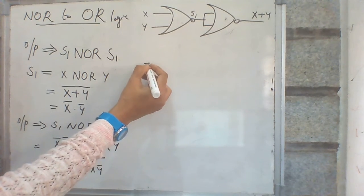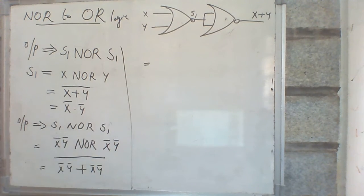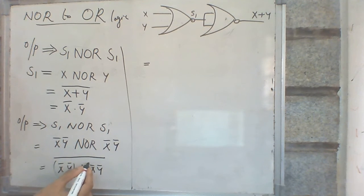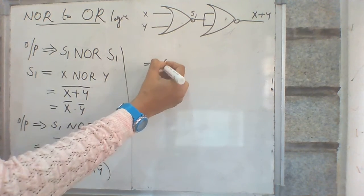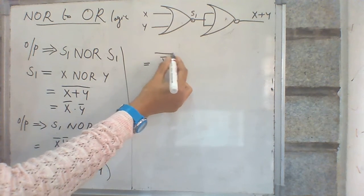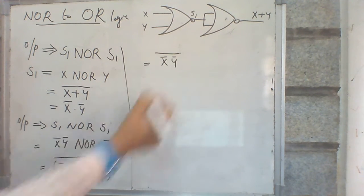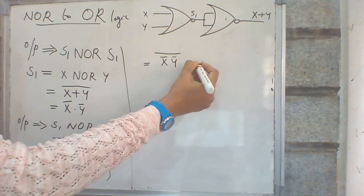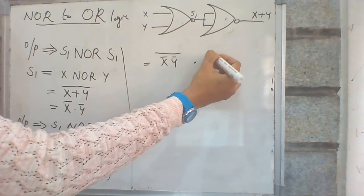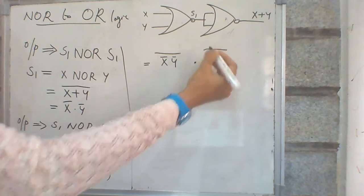Now apply De Morgan's theorem. The expression X bar Y bar plus X bar Y bar, the whole bar, becomes: the plus changes to dot, giving X bar Y bar the whole bar, dot X bar Y bar the whole bar.